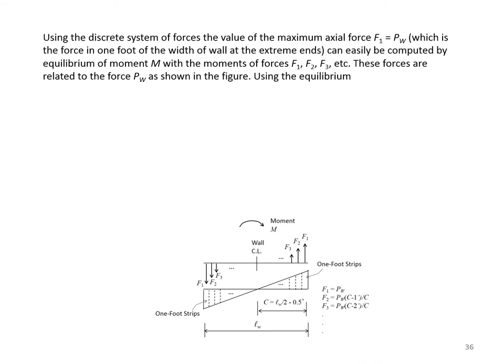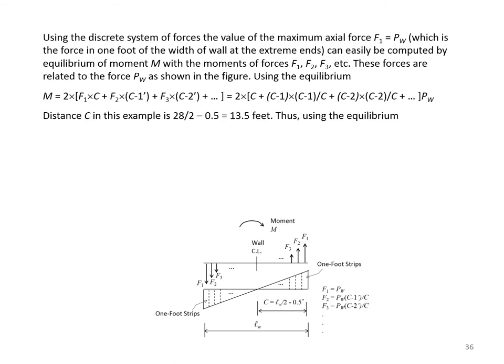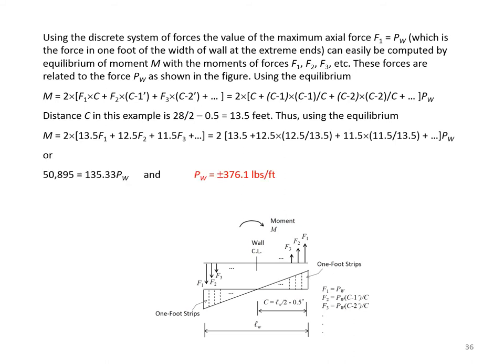Using the discrete system, equilibrium gives M = 2 × [F1·C + F2·(C−1) + ...], converting everything in terms of PW. With C = 13.5 feet and the moment M = 50,895 ft·lb, we solve to get PW = ±376.1 lb/ft (positive = compression, negative = tension).